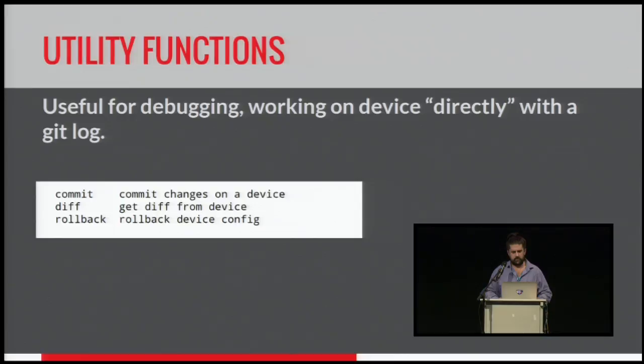Generally, when you're building a fabric, lots of people will go directly on the device and do changes. I don't like doing that, so I will pull a full config down, check it into a git repo, and then edit it with VI and use this as an interface. I found it works really well, and you keep a log of everything you're doing.